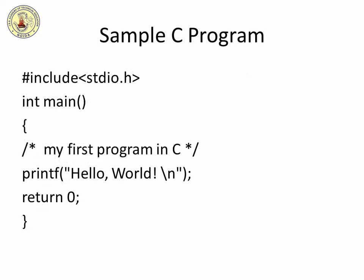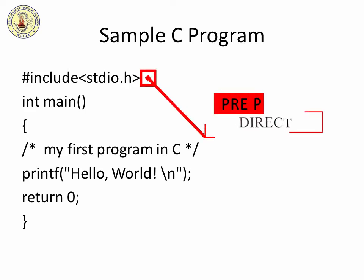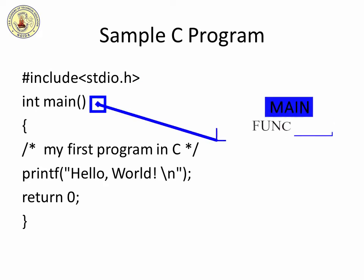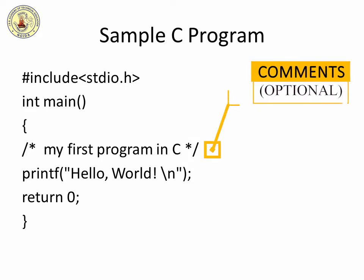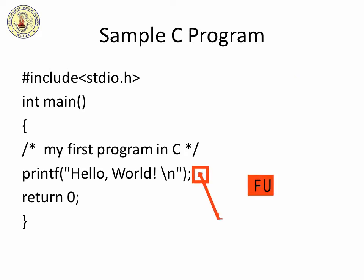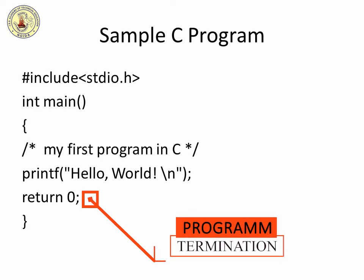Let us look at a simple code that would print the words 'hello world'. The first line, #include stdio.h, is a preprocessor command which tells a C compiler to include the stdio.h file before actual compilation. The next line, int main, is the main function where program execution begins. The next line with slashes is a comment, ignored by the compiler. The printf function causes the message 'hello world' to be displayed on the screen. The return 0 statement terminates the main function and returns the value 0.